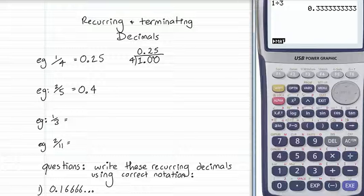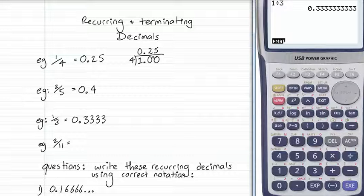This is a recurring decimal. And rather than write it with lots and lots of threes, even if we put three dots on the end to say this keeps going, we write recurring decimals with two different possible notations. Notation is just a way of writing. We put dots over the repeating segment, or we can put a line over the repeating segment.